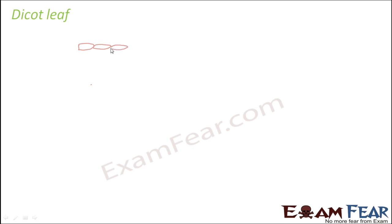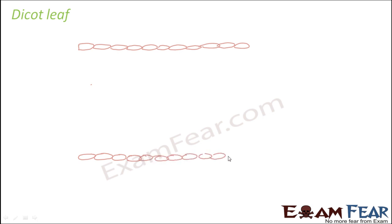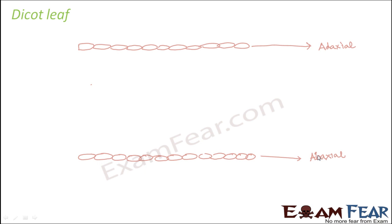Let us try to understand the internal structure of a leaf. The outermost layer is going to be the epidermis. In the case of a leaf, the upper surface is epidermis and the lower surface is also epidermis. The upper surface of epidermis is known as the adaxial surface and the lowermost surface is known as the abaxial surface. So the leaf is protected on both sides by epidermis.